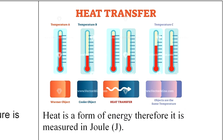There are overall three diagrams in which six thermometers are shown along with some objects. Starting from the left, the first two thermometers represent a warmer object and a colder object. In that condition, heat will transfer from the warmer object to the colder object, as shown by an arrow. The last diagram is very important: both thermometers show the same temperature, meaning energy from the hotter body has been fully transferred to the colder body. This is called thermal equilibrium.